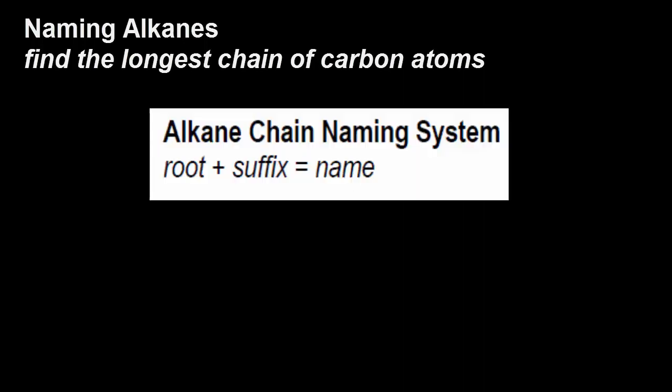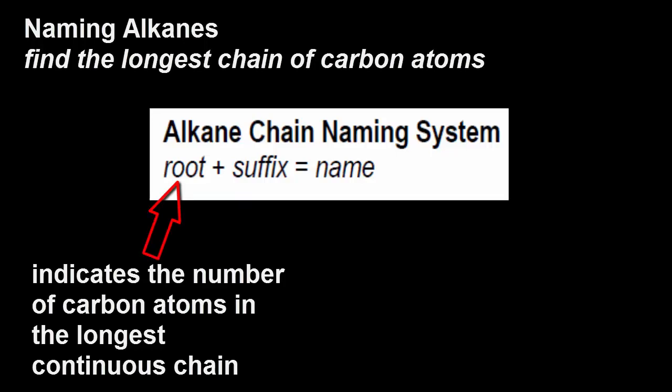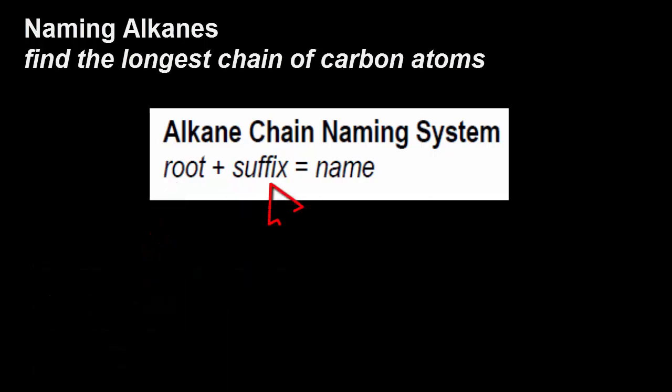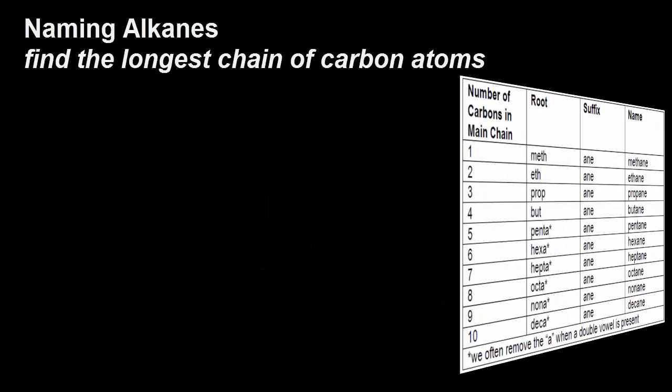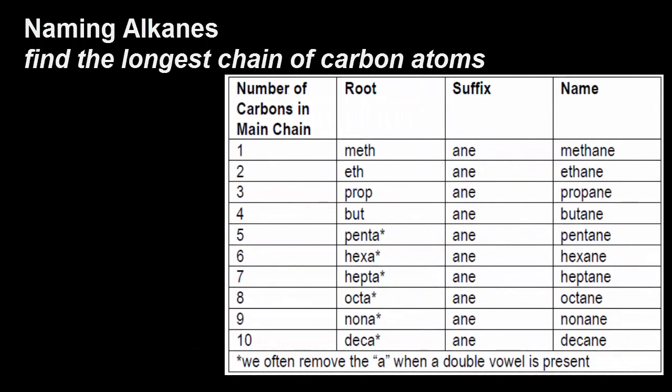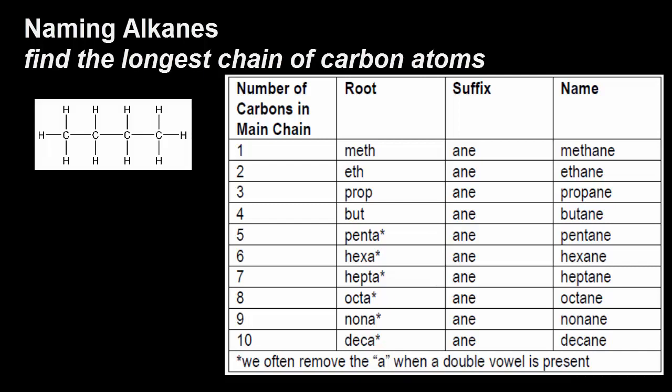The naming system has a root of the word which indicates the number of carbon atoms in the longest continuous chain. Then there's a suffix which indicates what type of molecule. So in our case today, the suffix is going to be A-N-E, or ane, because all of the molecules are called alkanes. Here's our table with the number of carbon atoms in the main chain and the root words. You can see them shown there.